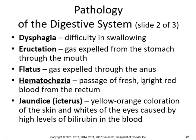Hematochezia — passage of fresh, bright red blood from the rectum. That's bad news. That can be early signs of cancer. Jaundice, icterus — yellow-orange coloration of the skin and whites of the eyes caused by high levels of bilirubin in the blood.